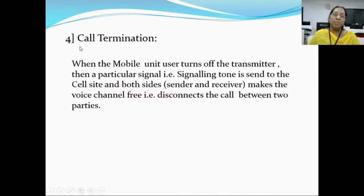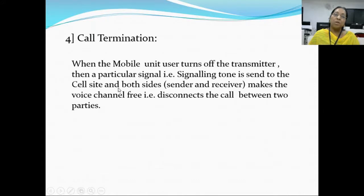The fourth operation is call termination, meaning ending the call. When the mobile unit user turns off the transmitter, a particular signal called a signaling tone is sent to the cell site. Both sides — sender and receiver — make the voice channel free and disconnect the call. When we turn off our mobile, the transmitter is turned off, a signal is generated and sent to the cell site, and both users free the voice channel given by the MTSO, disconnecting the call.